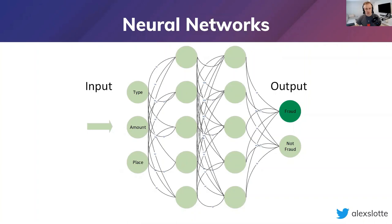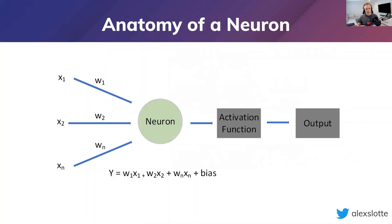Let's zoom in on one neuron. Each dot in the network is called a neuron and it's nothing more than an abstraction of linear algebra. Each neuron takes each input value - say the type or price of a transaction - multiplies it with a random number called the weight, adds all those things together, and passes that to the next neuron. So it's only multiplication and addition, and then pushing it out to the next neuron.